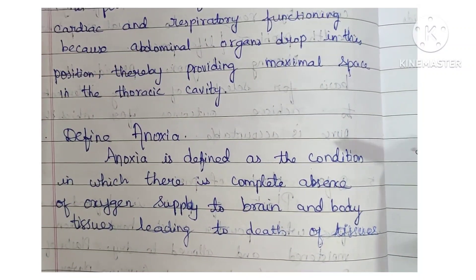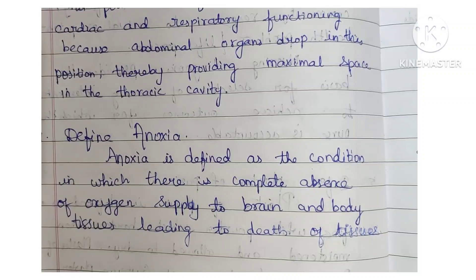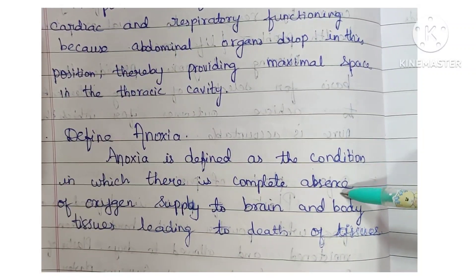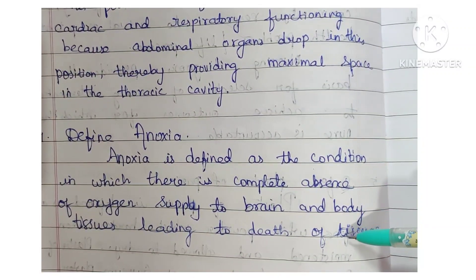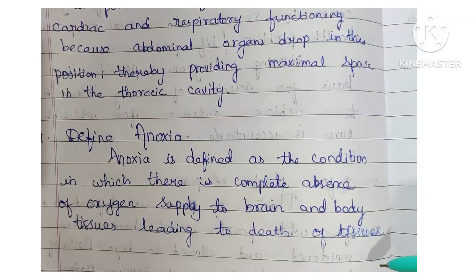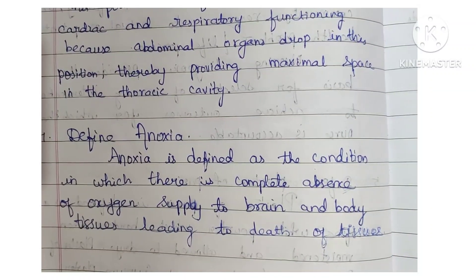Next: define anoxia. Anoxia is defined as the condition in which there is complete absence of oxygen supplied to the brain and body tissues, leading to death of tissues.